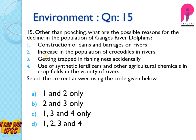Construction of dams and barrages on rivers — yes, this is correct. Increase in the population of crocodiles in rivers — no, the population of crocodiles has nothing to do with the decline of dolphins. Most species declines are due to human behavior and greediness, not natural species interactions. Getting trapped in fishing nets accidentally — yes, this is also a cause. Use of synthetic fertilizers and other agricultural chemicals in cropping in the vicinity of the river — this is also a reason, because the Gangetic river dolphin is a freshwater species and polluted water is suffocating for it. The answer is C — 1, 3, and 4.